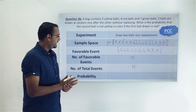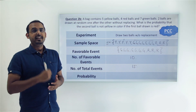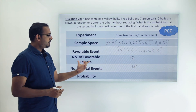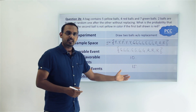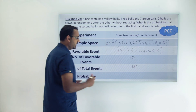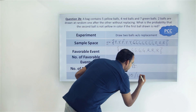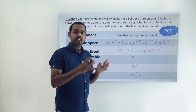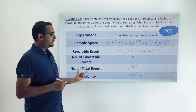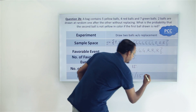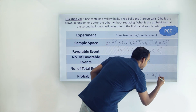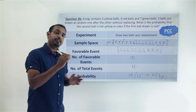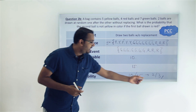Now you can calculate the probability. The number of favourable events is 10 and the total number of events is 15. The probability is the ratio of these two values: 10/15, which simplifies to 2/3. So the probability of not drawing a yellow ball when the first ball drawn was red is 2/3.